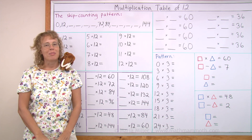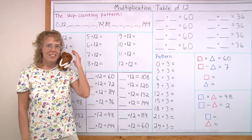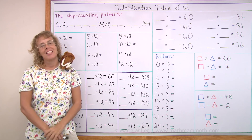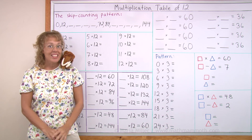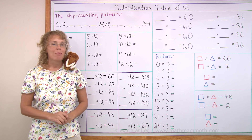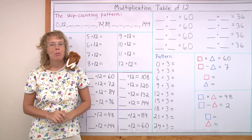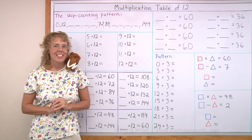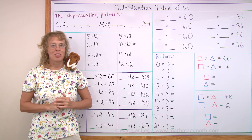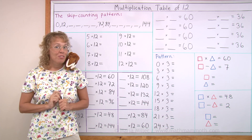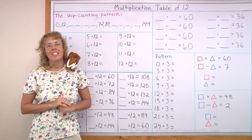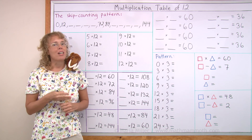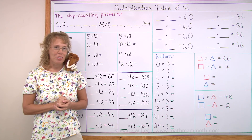Hello, my name is Maria and this is Mathi, my mascot. In this lesson we are studying the multiplication table of 12, and that's the last table we are studying. There's only one new fact to study there, which is 12 times 12 equals 144.